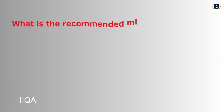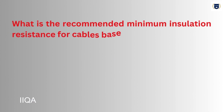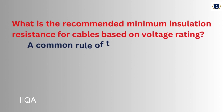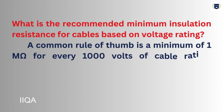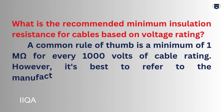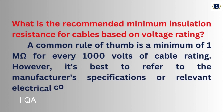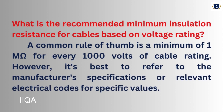What is the recommended minimum insulation resistance for cables based on voltage rating? A common rule of thumb is a minimum of 1 megohm for every 1000 volts of cable rating. However, it's best to refer to the manufacturer's specifications or relevant electrical codes for specific values.